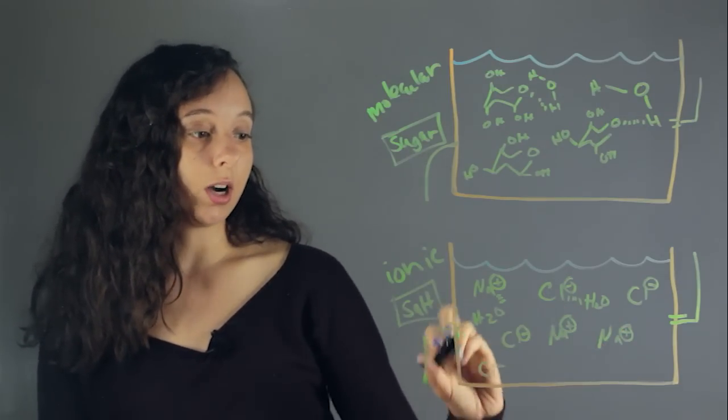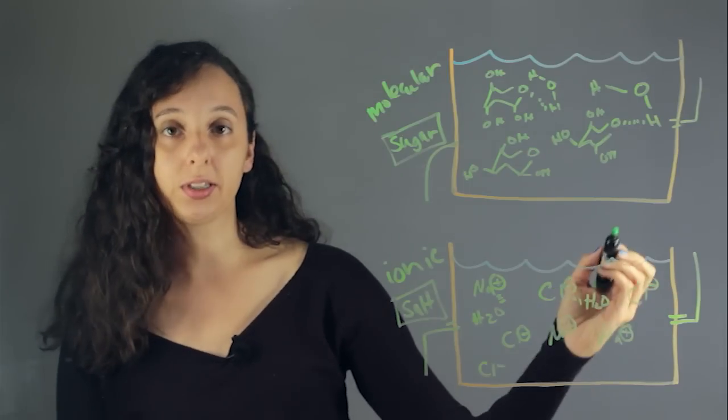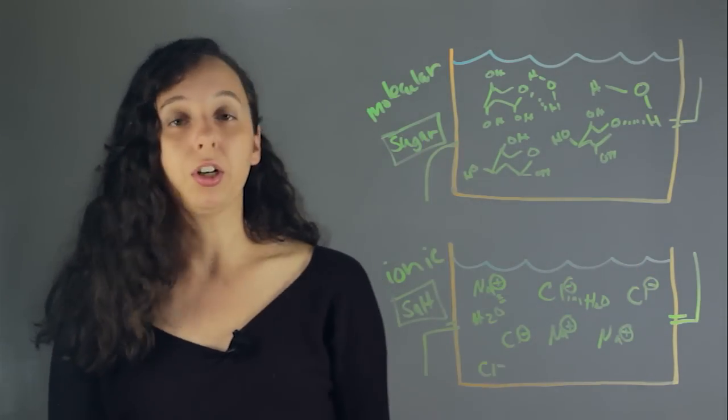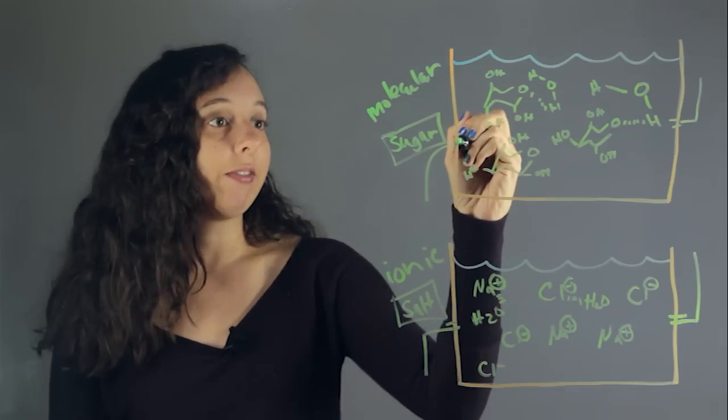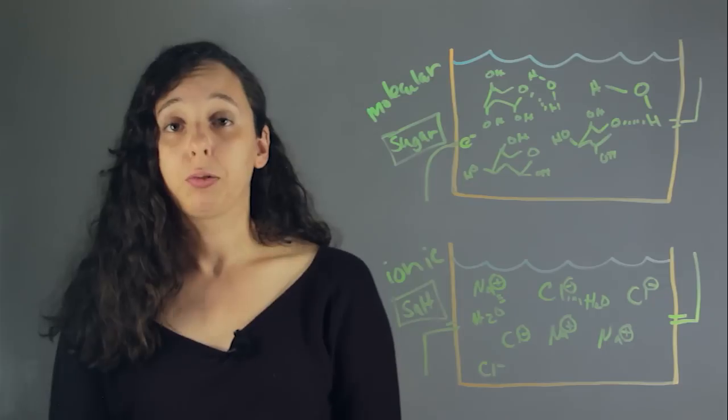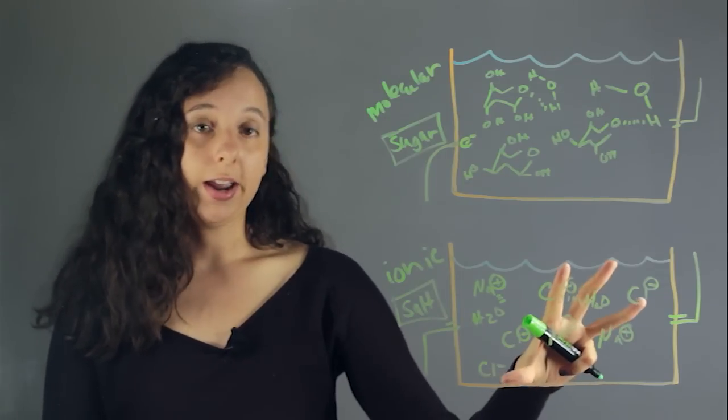So an electron could easily hop along this solution and get to the other side, be a good conductor, whereas this molecular compound really couldn't do that. It really, if you have an electron here, it will eventually get to the other side. But it's not an environment where it's really easy to do that, like the ionic solution.